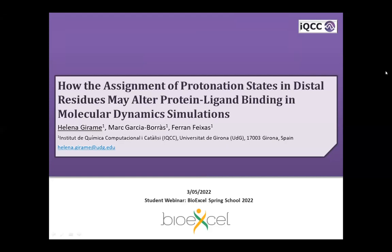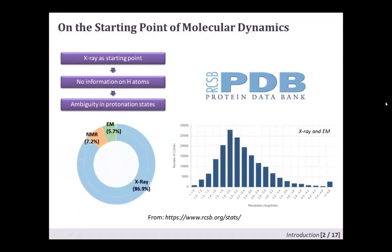Good afternoon. I'm going to dive into a project I've been working on for the past months. When starting molecular dynamics simulations in biomolecular research, we usually retrieve the starting structure from the Protein Data Bank. By statistics, we will most likely end up with a crystal structure without enough resolution to get information on hydrogen atoms. This is a significant limitation because we have doubts about which protonation state to assign to titratable residues. Fortunately, some computational tools were developed to help, and they became indispensable, but they can still fail.